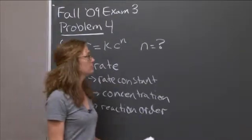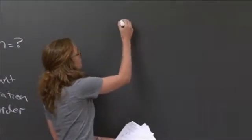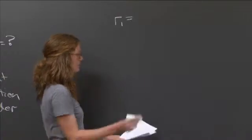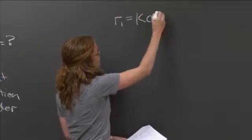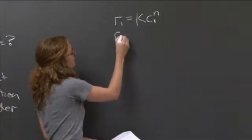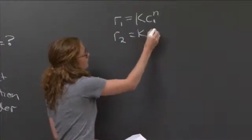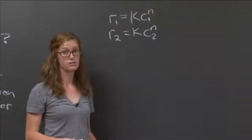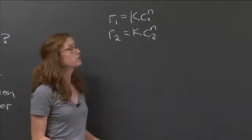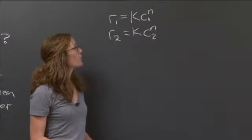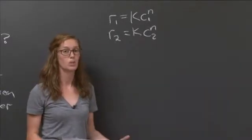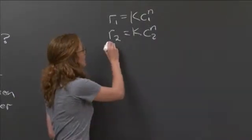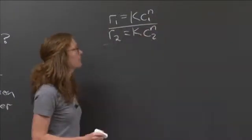Looking at what we're given, we can write two different equations. The first line gives us a specific rate for a specific concentration. The second line gives us another rate for a second concentration. So now we have two equations and two unknowns. That means we can solve for one of the unknowns, and then could solve for the other one if we wanted to. But here we only care about N. So how I'm going to choose to solve this is I'm going to divide the first line by the second line.